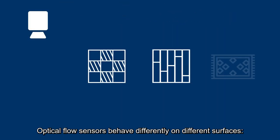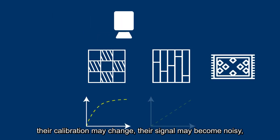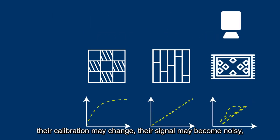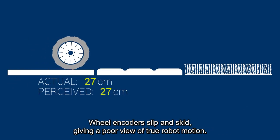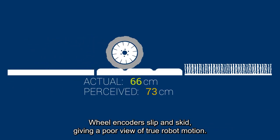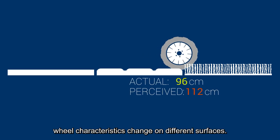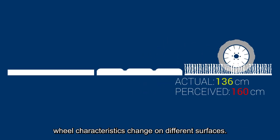Optical flow sensors behave differently on different surfaces. Their calibration may change, their signal may become noisy, or they can lose tracking entirely. Wheel encoders slip and skid, giving a poor view of the robot motion. Like the optical flow sensor, wheel characteristics change on different surfaces.